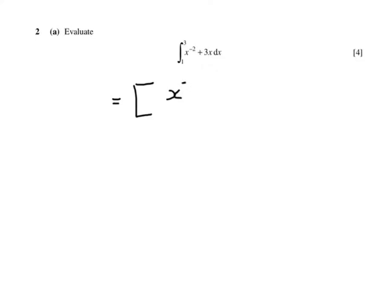x to the minus 2 becomes x to the minus 1 over minus 1, and 3x becomes 3x squared over 2, and that's between 1 and 3.